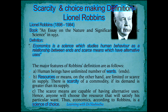The third economist is Lionel Robbins, whose time period was from 1898 to 1984. The name of his book was 'An Essay on the Nature and Significance of Economic Science,' published in 1932. He defined economics as: 'a science which studies human behavior as a relationship between ends and scarce means which have alternative uses.' This modern approach was highlighted with a few main points.